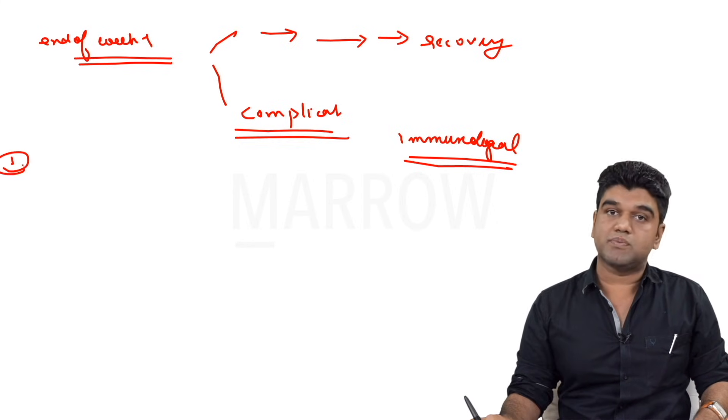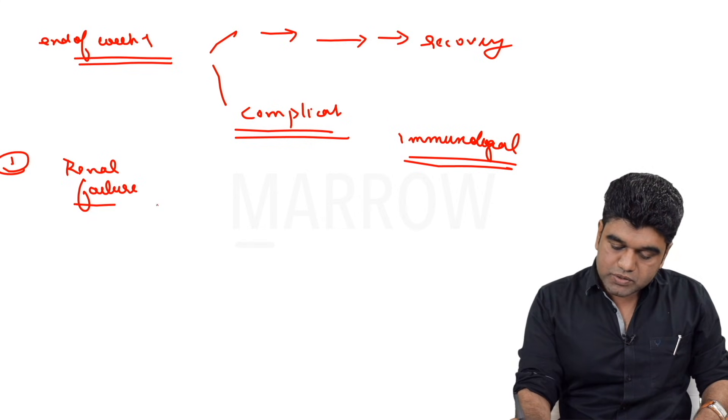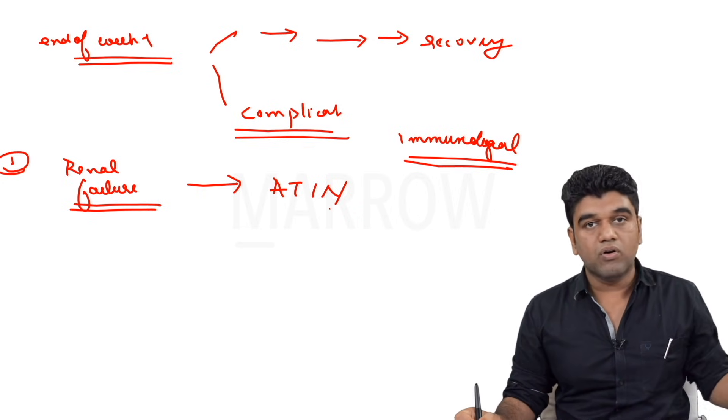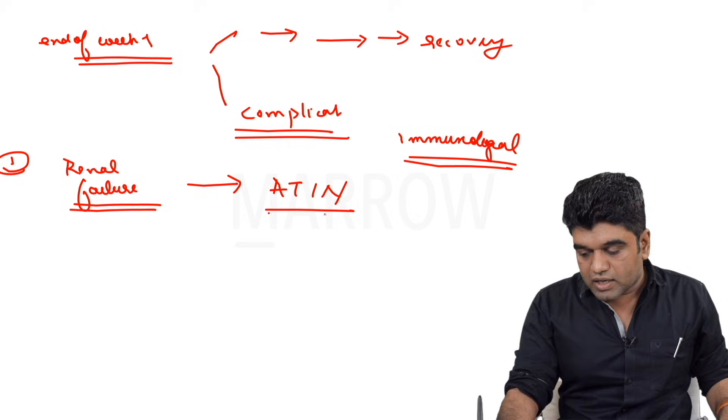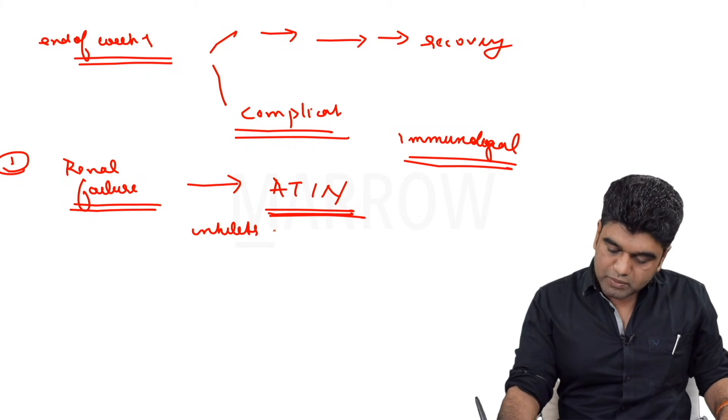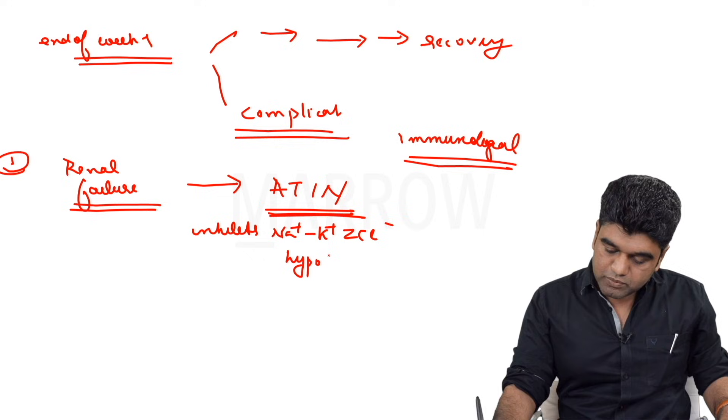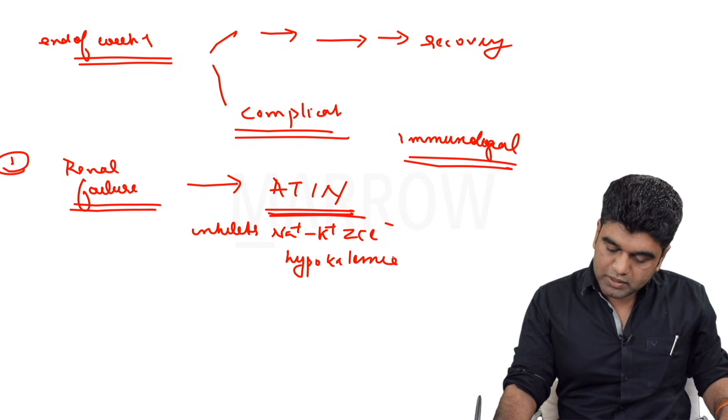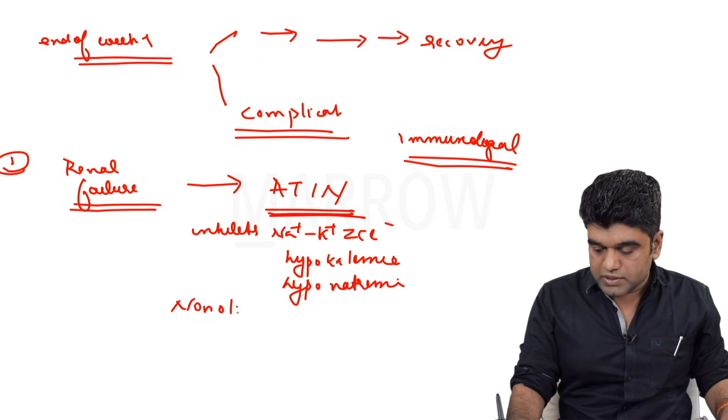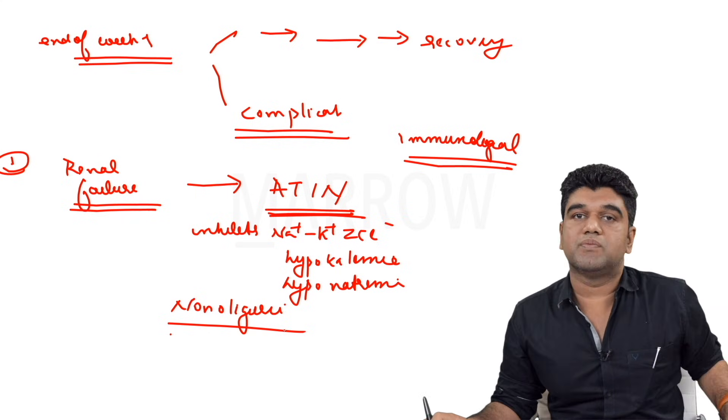Complication number one that leptospirosis patients can develop is renal failure. Renal failure in leptospirosis is a proper acute tubular interstitial nephritis (ATN). We never talked about ATN in dengue or typhoid, but in lepto we are. Because this organism inhibits the sodium potassium 2 chloride transporter at the level of the thick ascending limb of loop of Henle, most of our patients with lepto tend to have hypokalemia and hyponatremia.